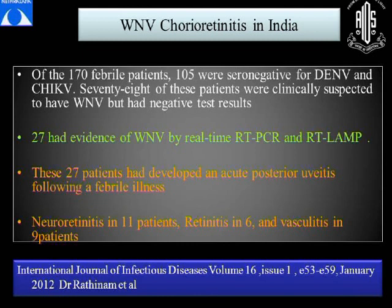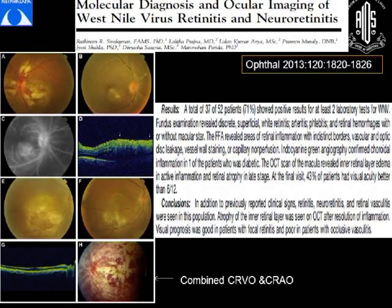In another paper by Dr. Ratnam et al., of 52 patients, 37 had positive tests for West Nile virus. Fundus examination revealed discrete superficial white retinitis, arthritis, periphlebitis, retinal hemorrhages, disc leakage, vessel wall staining, capillary non-perfusion. These lesions are typically multifocal with linear clustering or target-like appearance of the choroidal lesions, sometimes associated with hemorrhages, vascular sheathing, and occlusive vasculopathy, and rarely optic neuritis. Some patients have also presented with combined CRVO and CRAO.